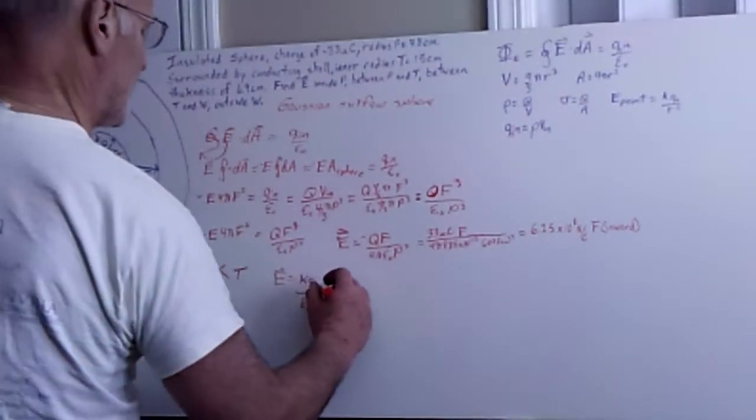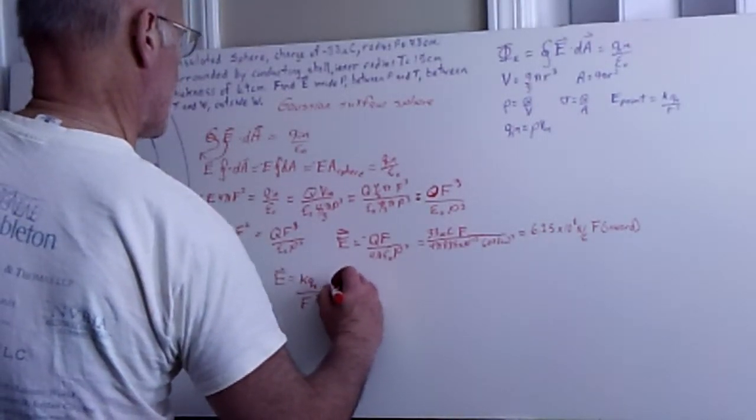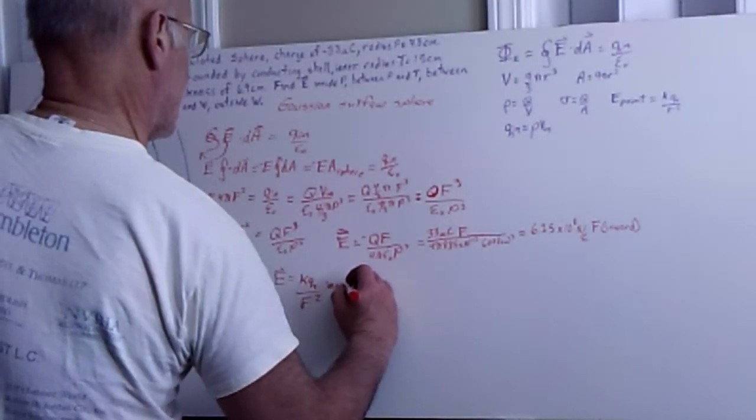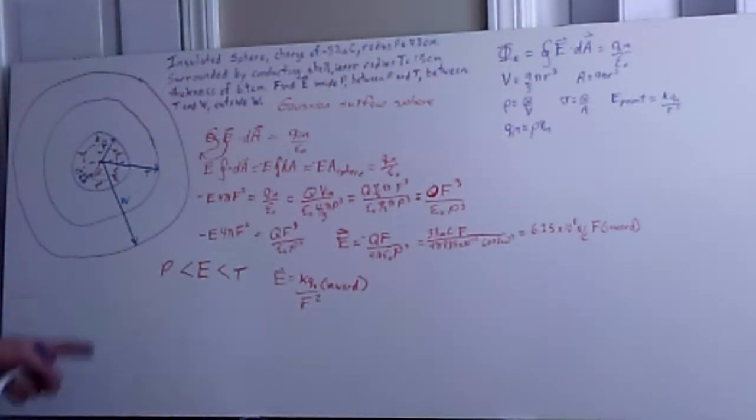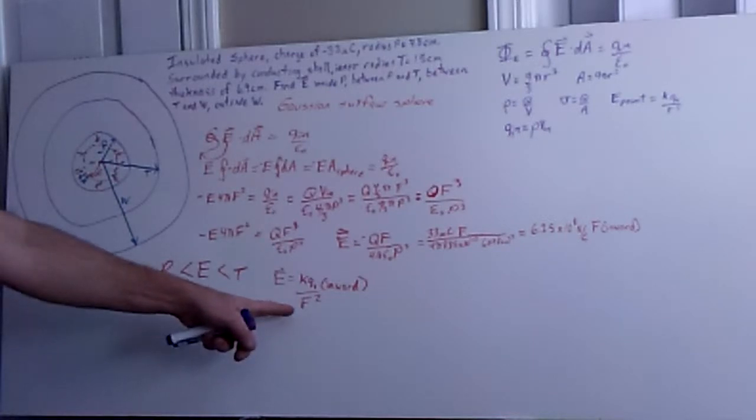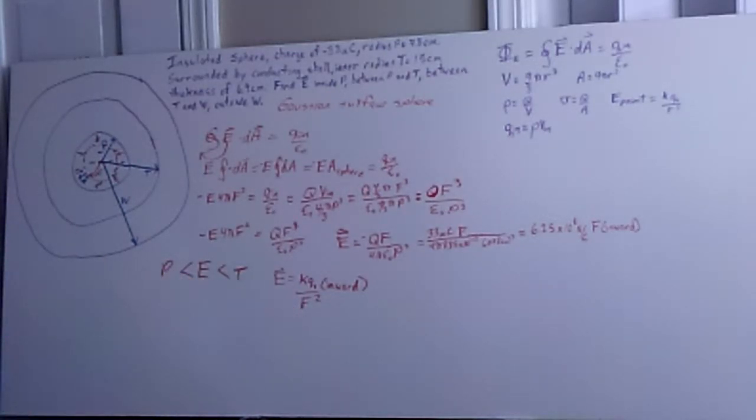And so that ends up being pretty simple. And again, the direction is inward, so that gives us direction. And so that solves the electric field anywhere inside of here. We treat everything here like a point charge, so then all that matters is our distance away from that origin.